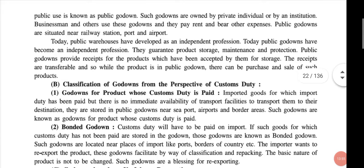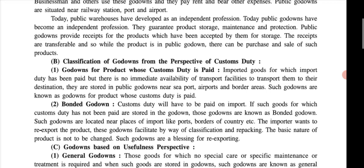Now for the perspective of custom duty — there are two types: custom duty paid godown and bonded godown where custom duty is not paid. The bonded godown is the name given to the godown in which products whose custom duty has not been paid are stored. You can refer to it in the exam either as bonded godown or as godown for products whose custom duty is not paid.